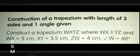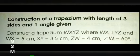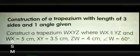Next, let us see how to construct a trapezium with the length of 3 sides and one angle given. Construct a trapezium WXYZ where WX is parallel to YZ, and WX equals 5 cm, XY equals 3.5 cm, ZW equals 4 cm, and angle W equals 60 degrees.